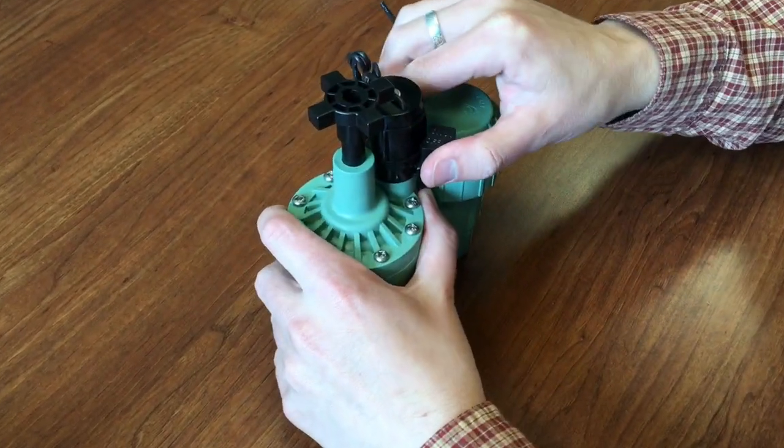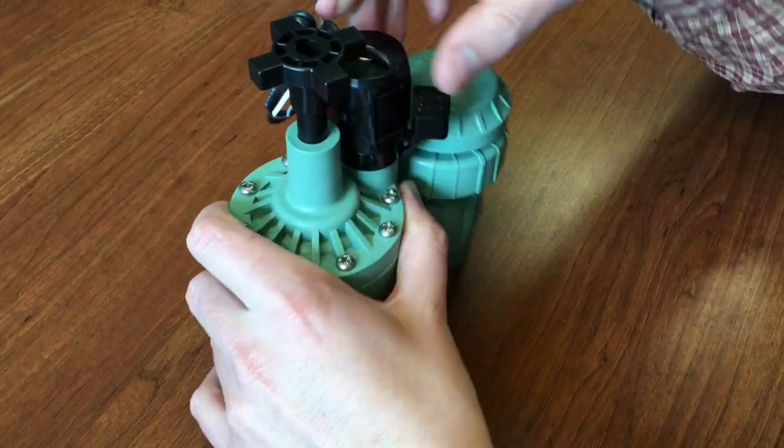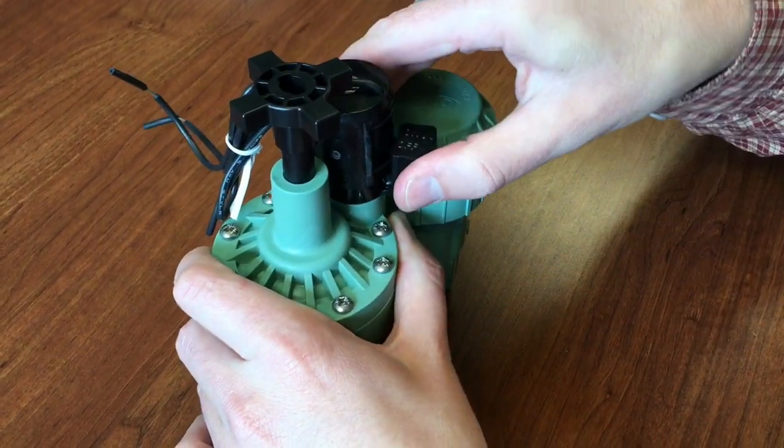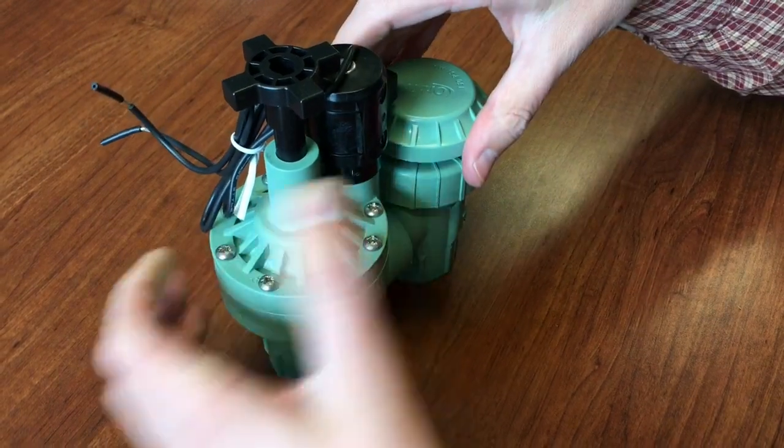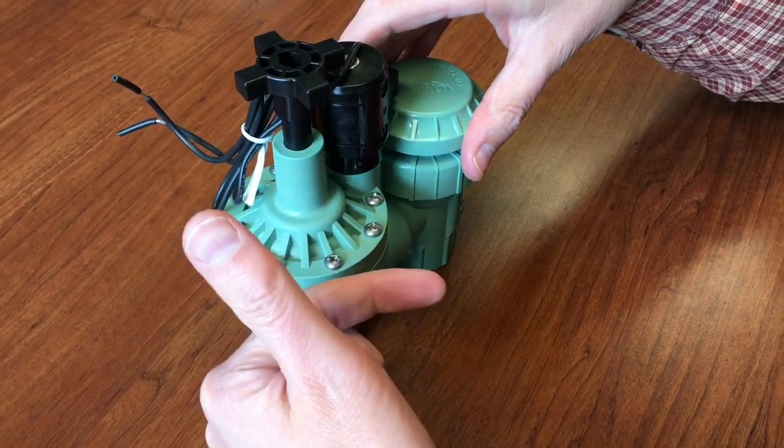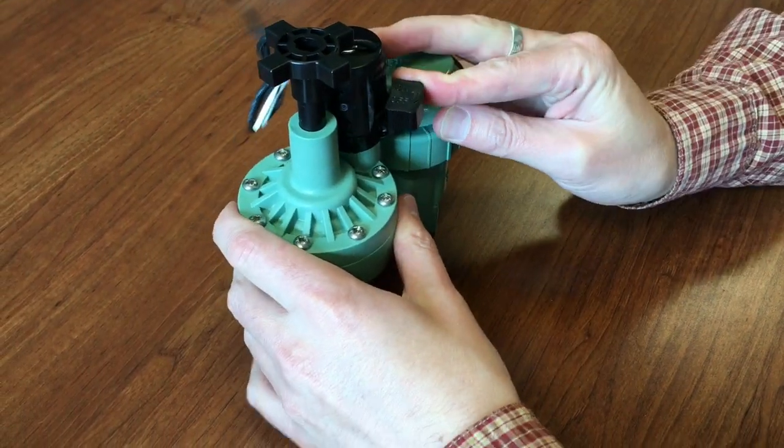So when you replace this solenoid, you'll notice it has this flow control lever. If you turn this, there's a good chance that flow control lever might follow it. Now if that goes to on, it's going to actually start flowing water. So you want to make sure that that's off.